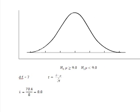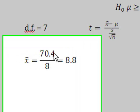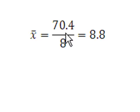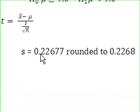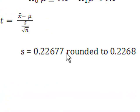So I've determined my x bar by simply coming up with 70.4. I came up with that by adding all of the individual sample observations together. I had a total of 8, 70.4 divided by 8 gives me an x bar value of 8.8. Now, I need to calculate the standard deviation of the sample. So, I'm going to calculate the standard deviation of the sample to be 0.22677. I'm going to round that to 0.2268.